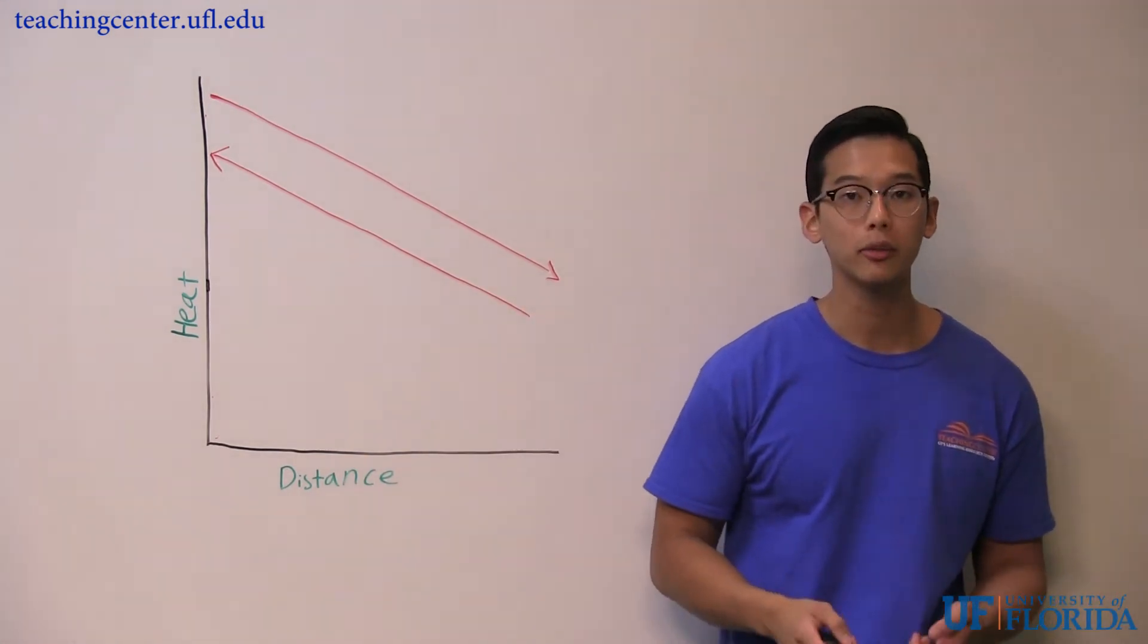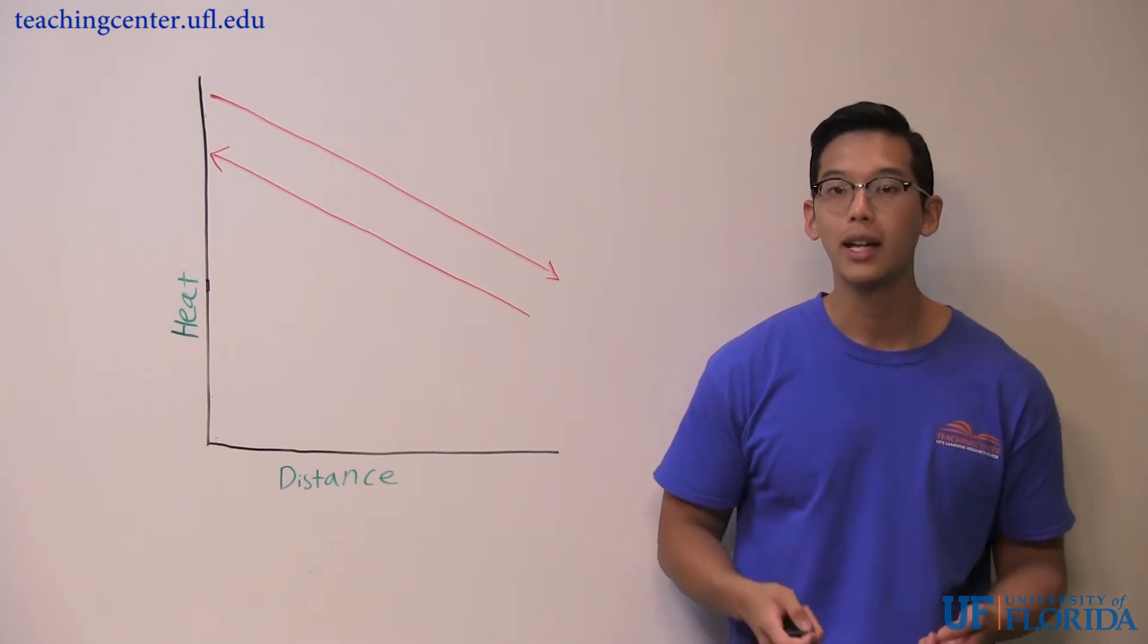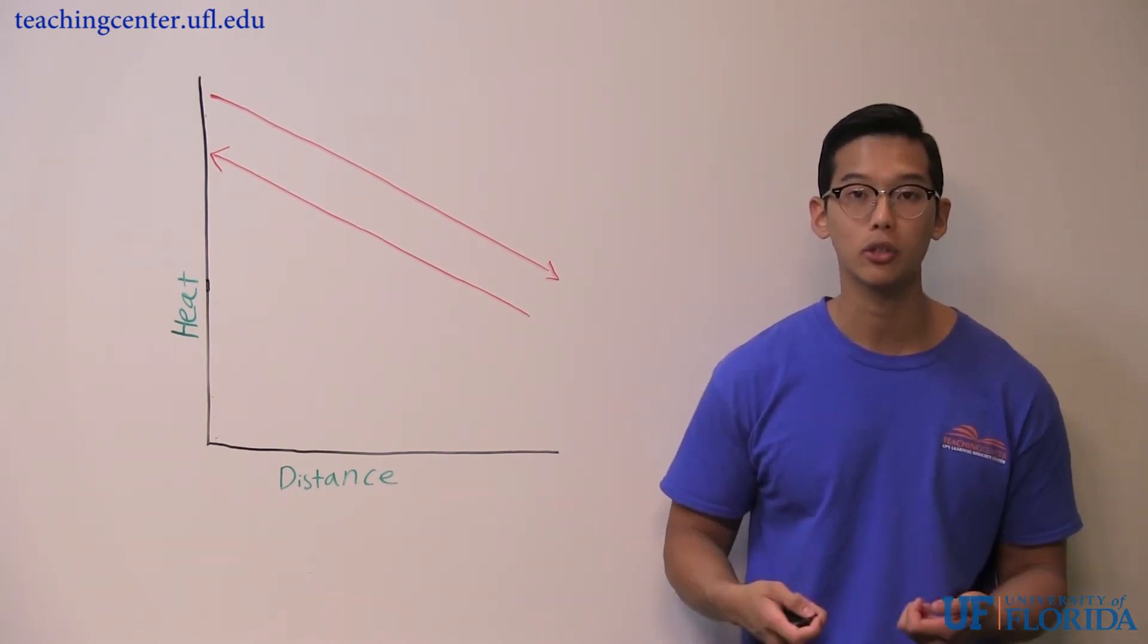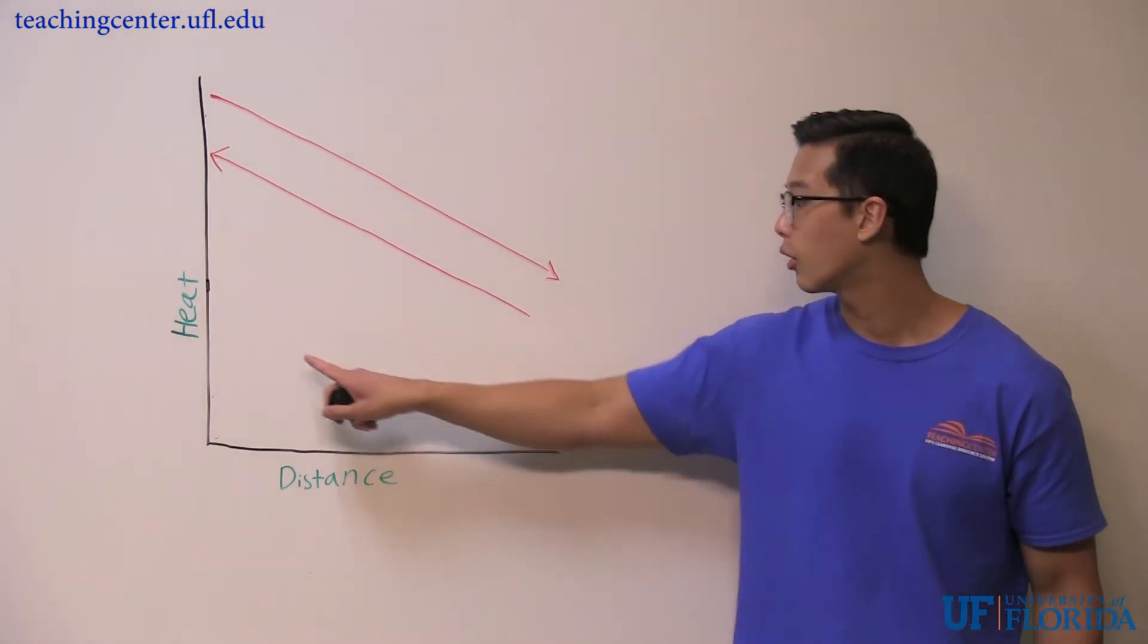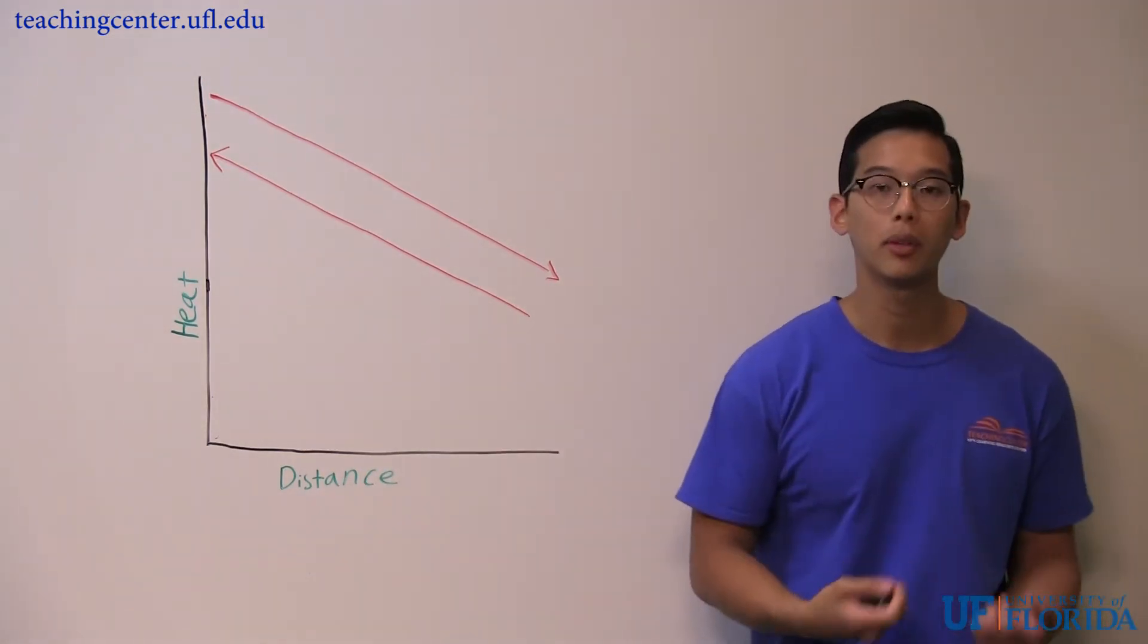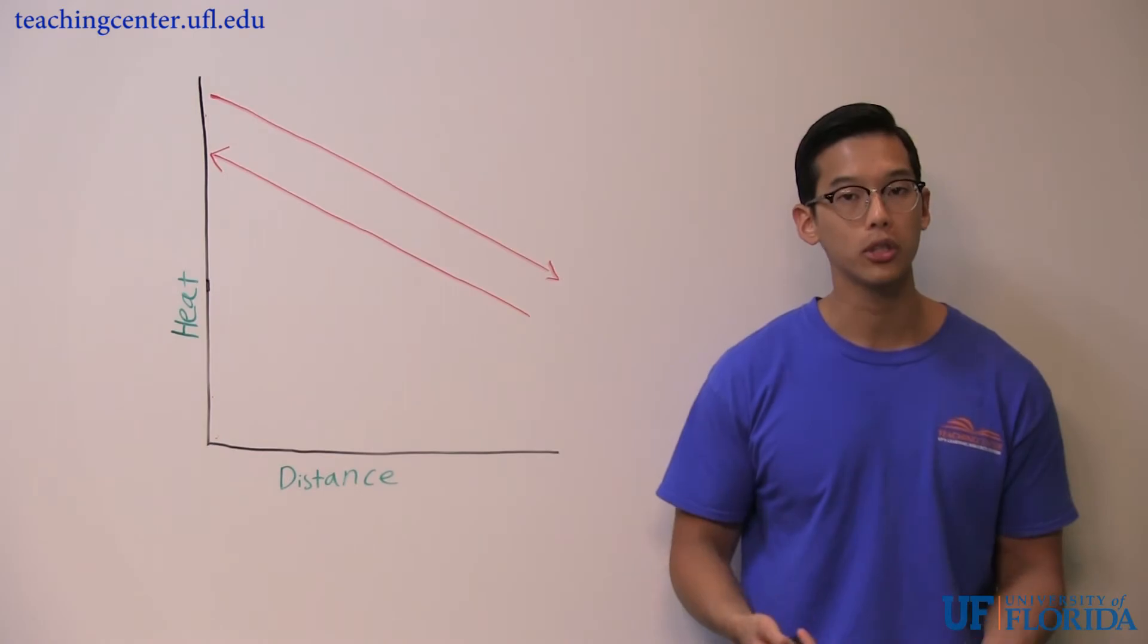Rather than quickly reaching equilibrium like in concurrent flow, counter-current flow maintains a concentration gradient. This allows for heat exchange to occur across the whole entire distance of the blood vessel rather than just a portion.